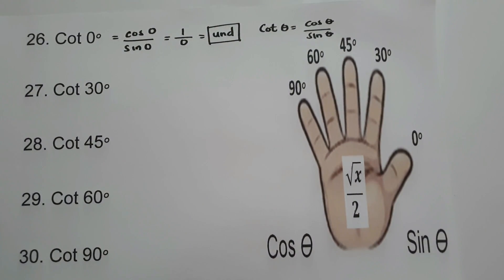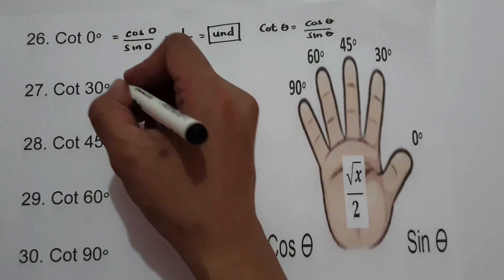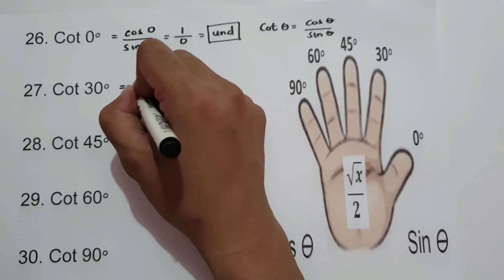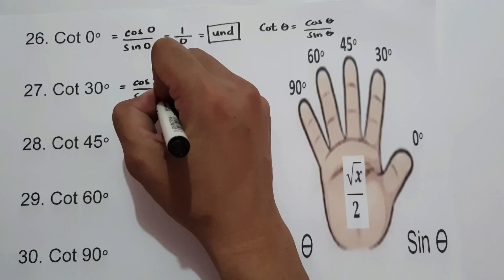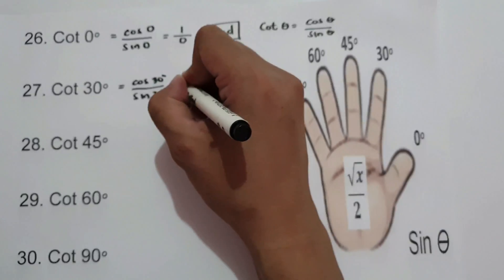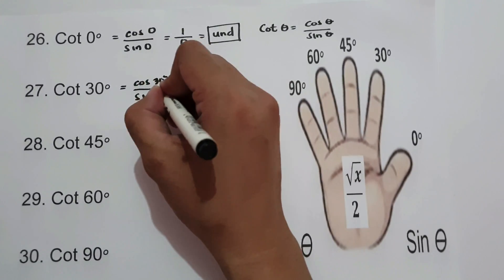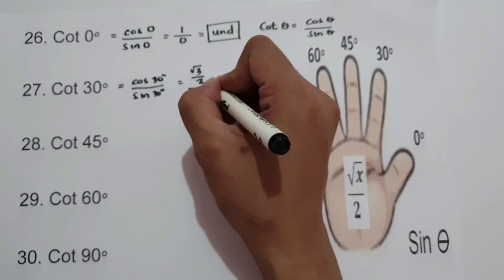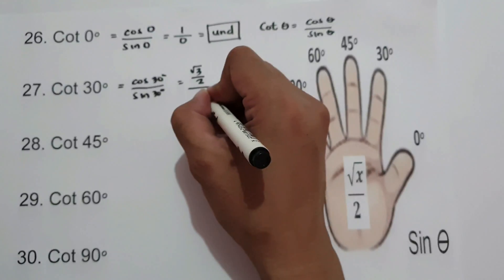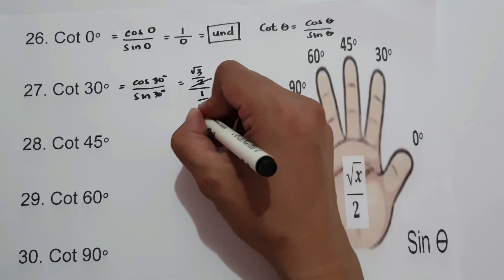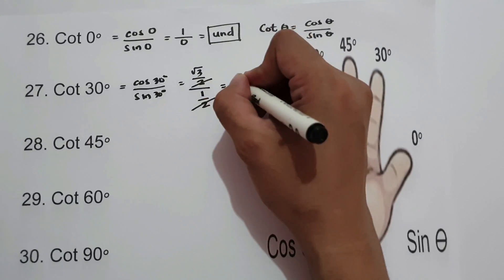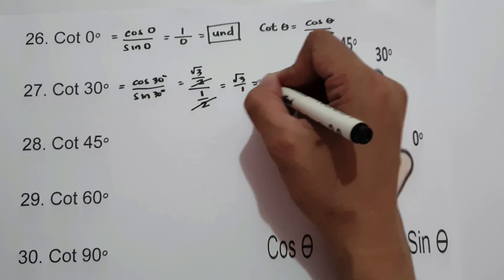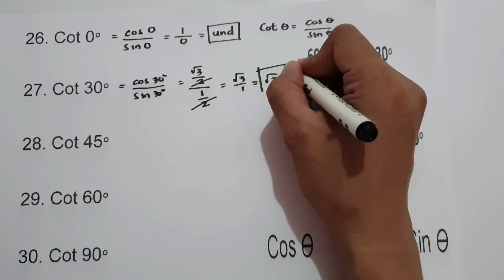For cotangent 30°, that is cosine 30° over sine 30°. Cosine 30° is square root of 3 over 2, and sine 30° is 1/2. Canceling gives square root of 3 over 1, which is square root of 3. Cotangent 30° is square root of 3.